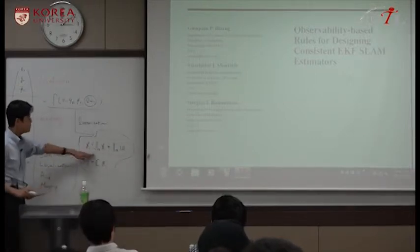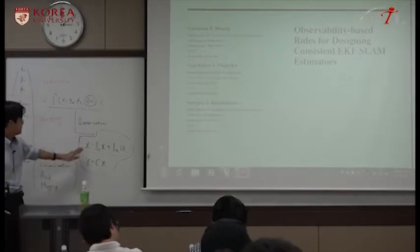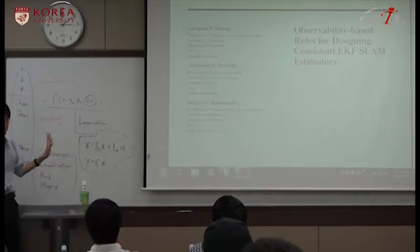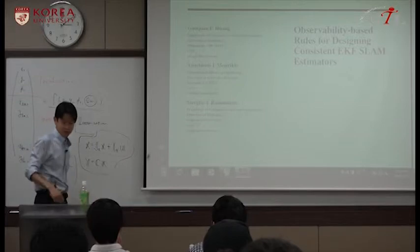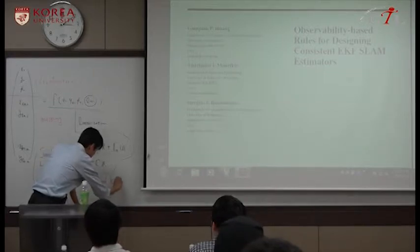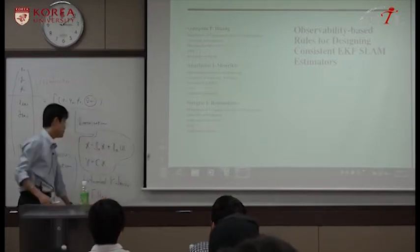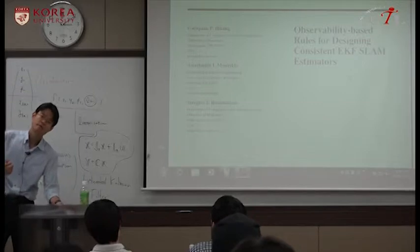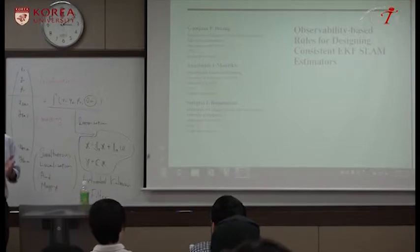We get this kind of new state representation. And Y is C, X. And using this new state space realization, we estimate those states. After making them linear, we do something. Historically, many people used extended Kalman filter for the estimation. Maybe many of you are still using extended Kalman filter for the state estimation.